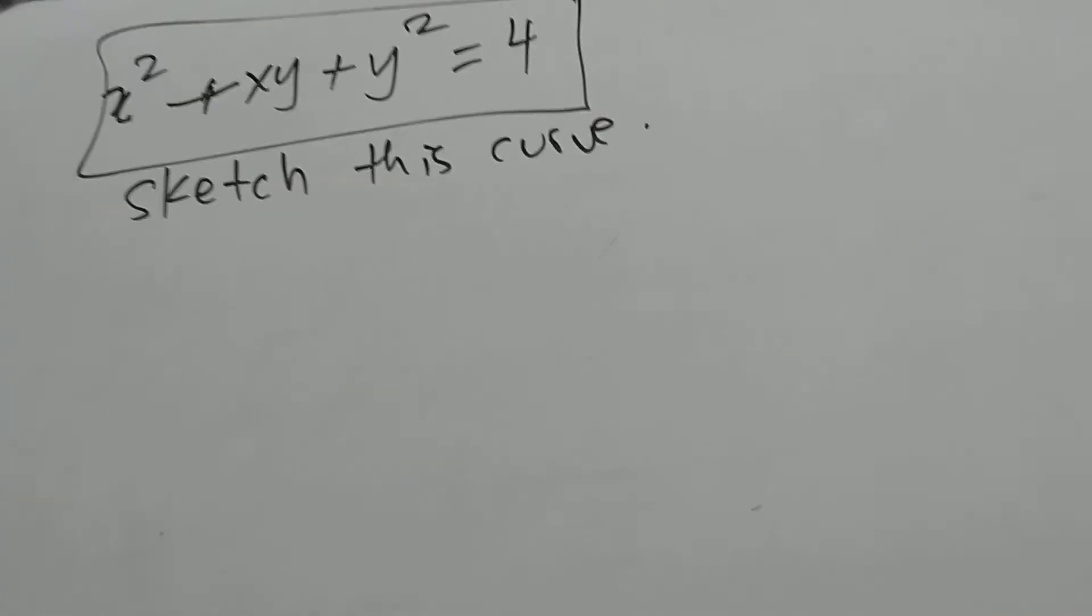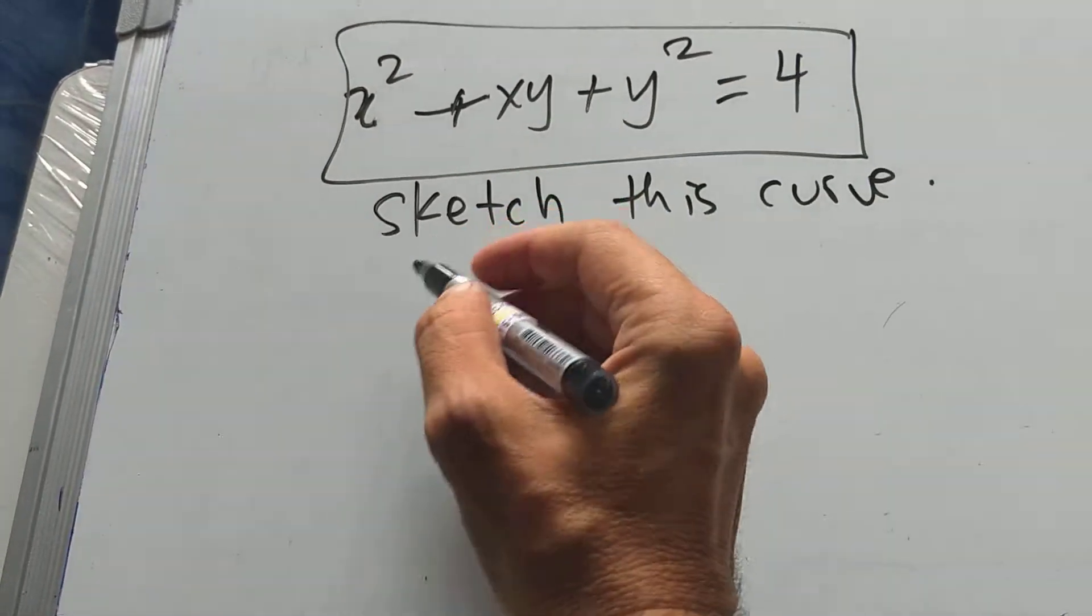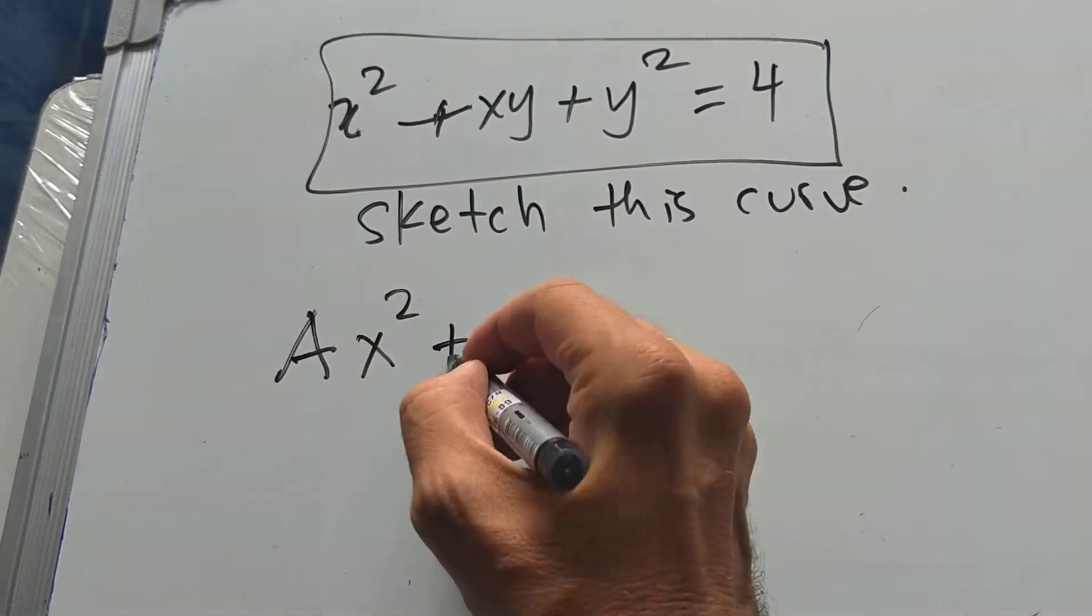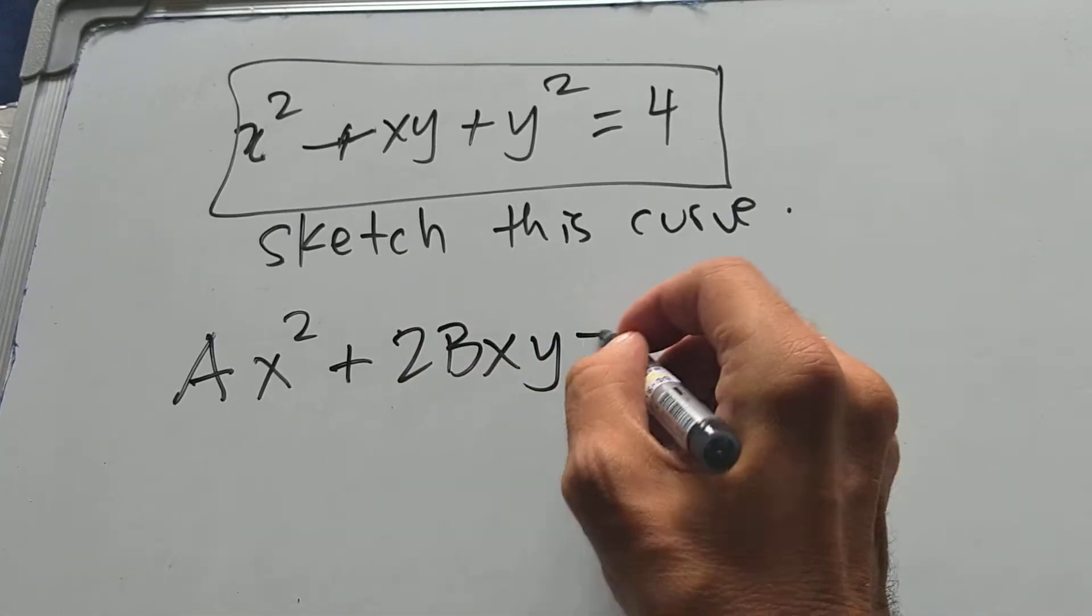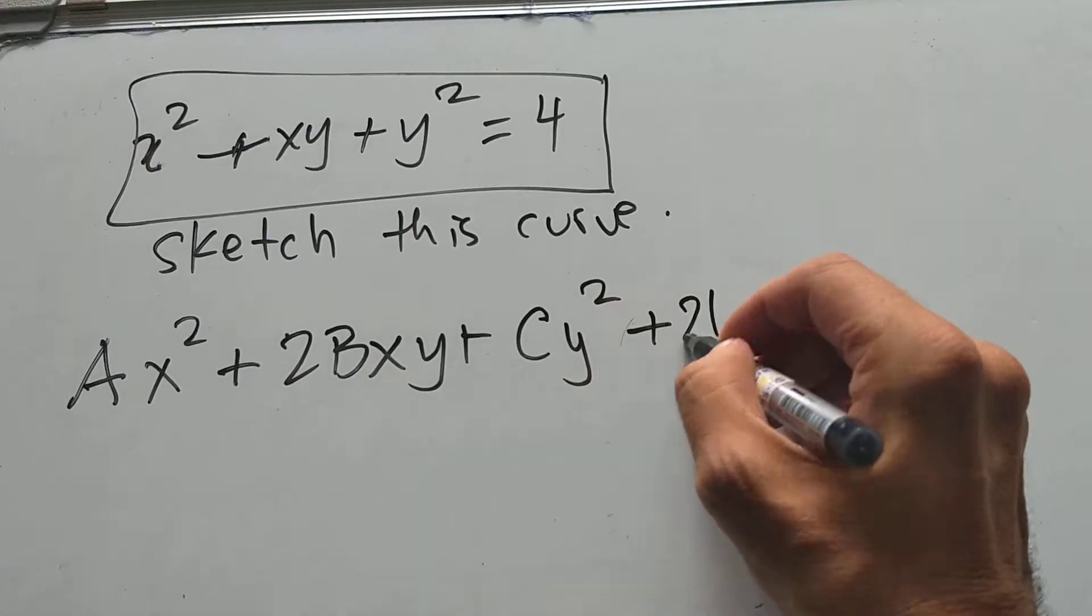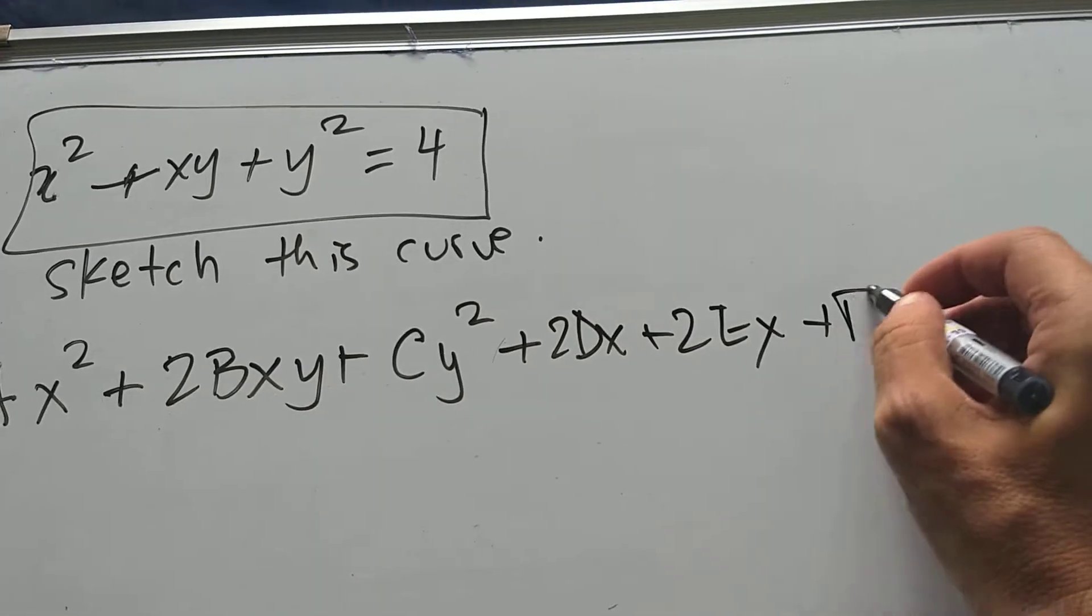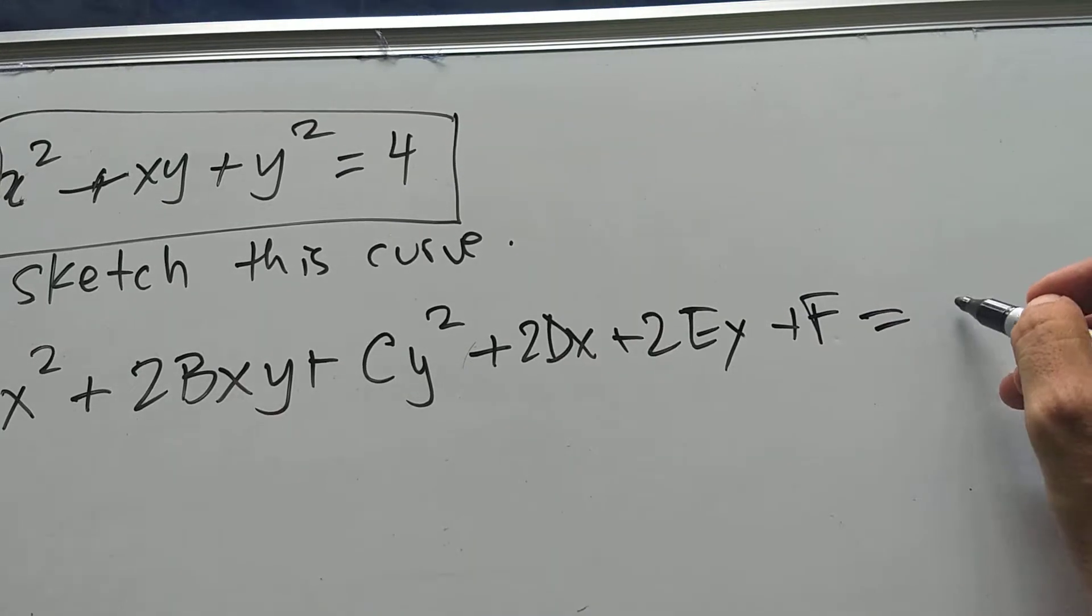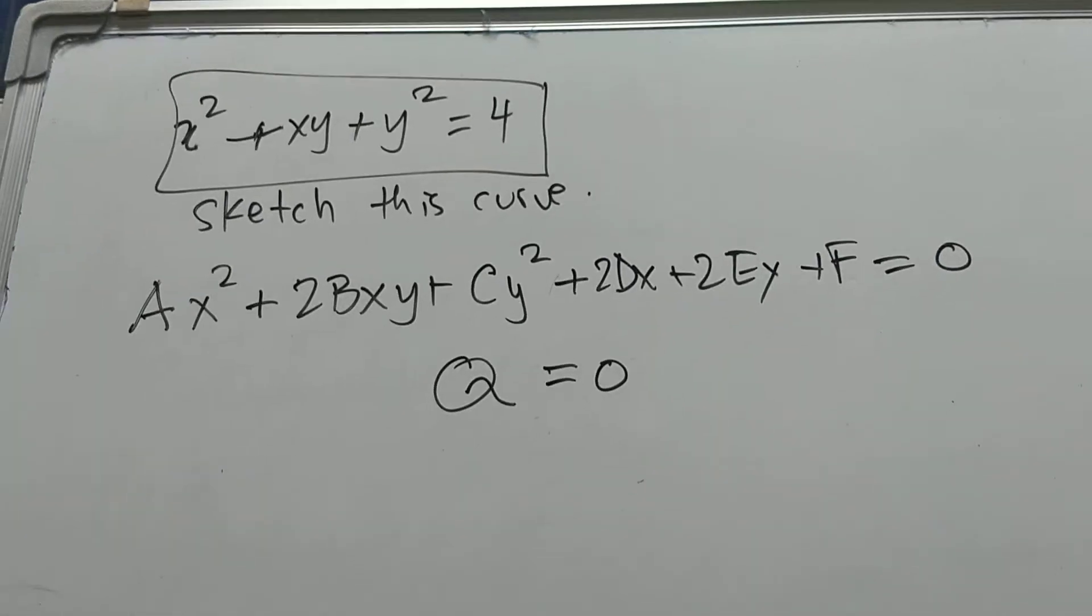Alright, okay. Now, first of all, let's see. What kind of curve is this? This is some quadratic form. And the quadratic form in general looks like this: ax² plus 2bxy plus cy² plus 2dx plus 2ey plus some constant term f equals 0. And I can call this whole thing Q is 0. Quadratic form.